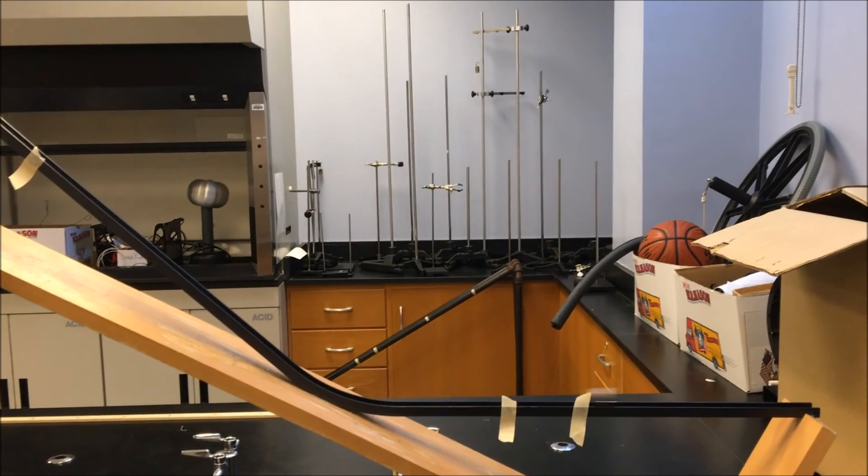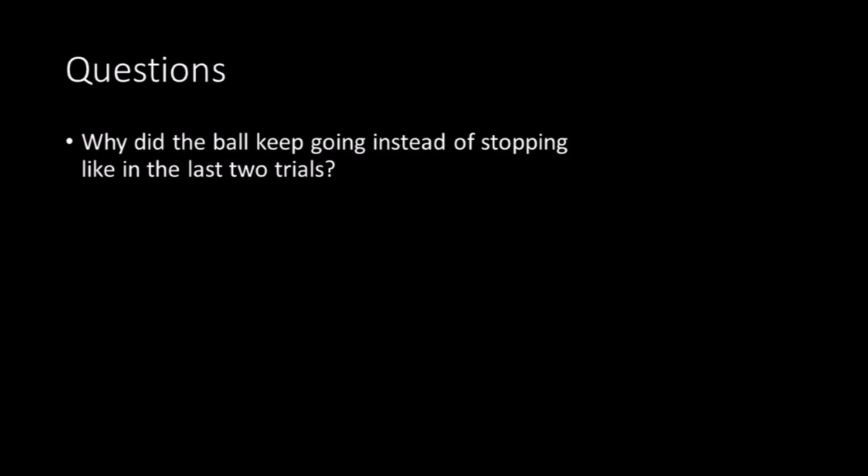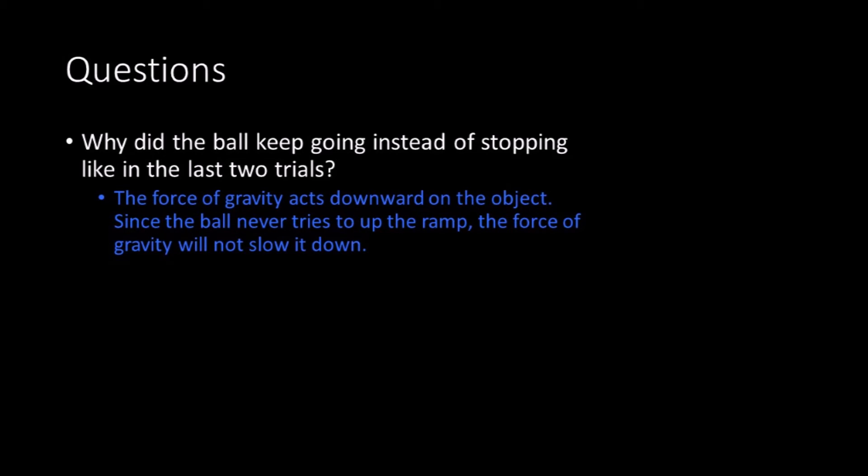Trial 3. The ramp is now inclinated so one side is perfectly flat. Why did the ball keep going instead of stopping like in the last two trials? The force of gravity acted downward on the object. Since the ball never tries to go up the ramp, the force of gravity will not slow it down.